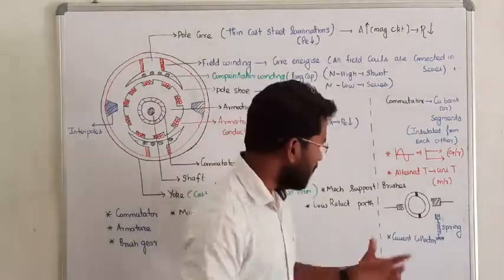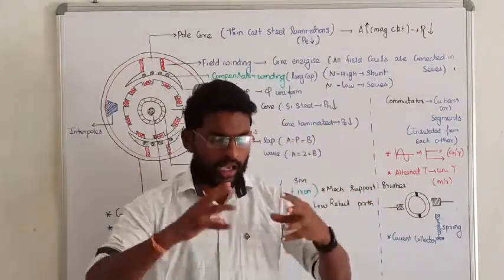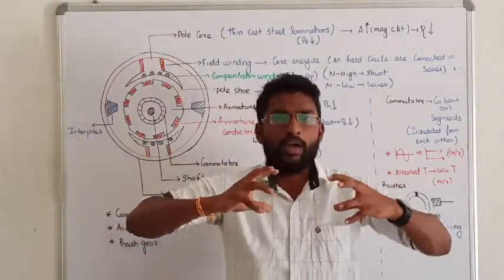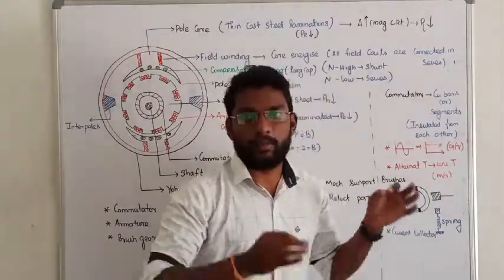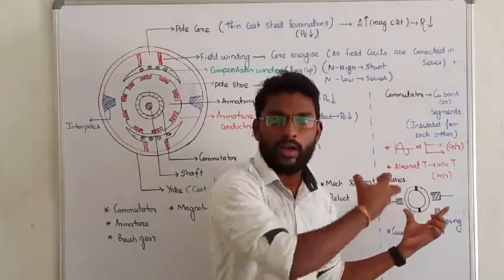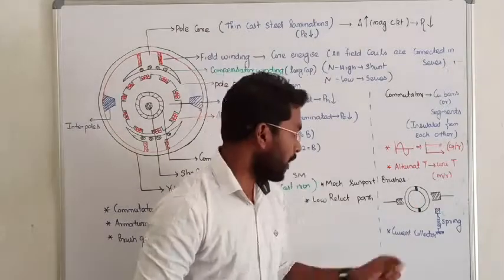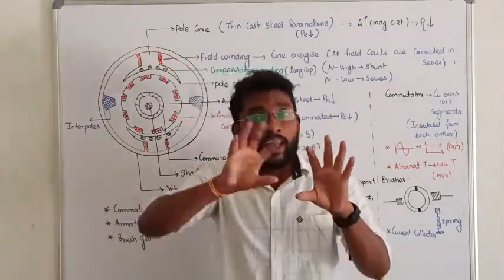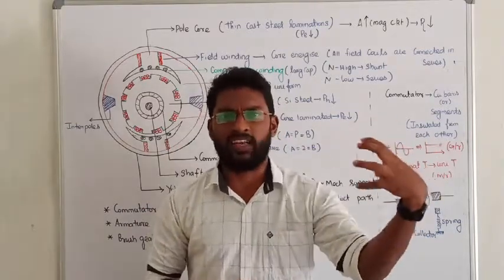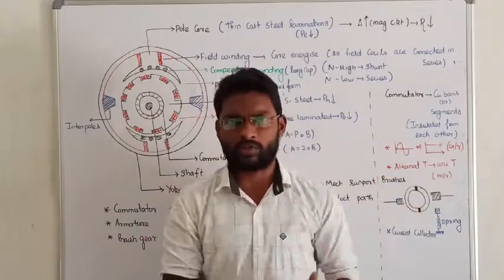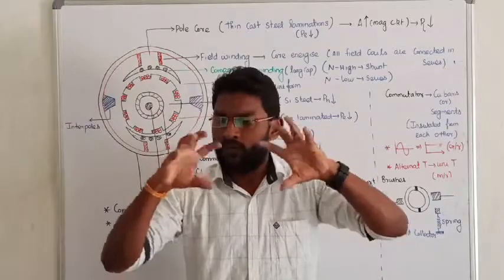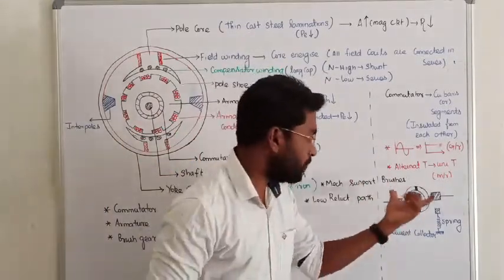The last component is the brushes. The brush is fixed and stationary, while the commutator rotates with the rotor. When the rotor rotates, the commutator rotates, but the brush remains fixed. The brush rests on the commutator and collects the current, then transfers it to the external load. That is the purpose of the brush. Usually, this brush is connected with a spring so that the spring maintains constant pressure between the brush and the commutator, ensuring good electrical contact at all times.